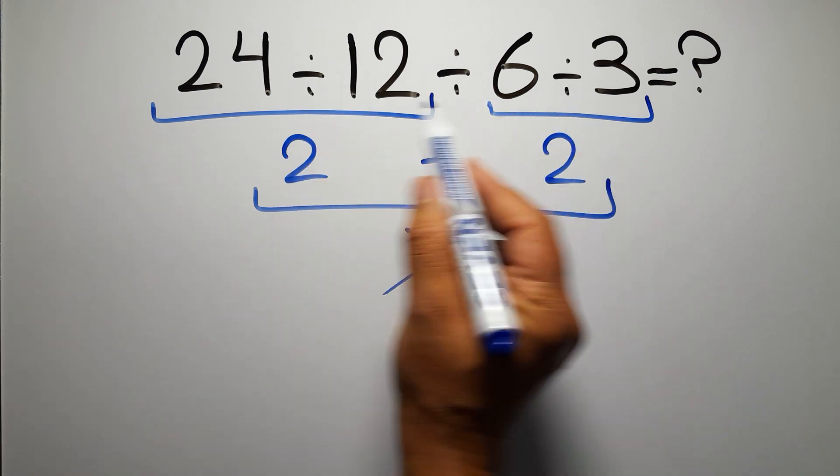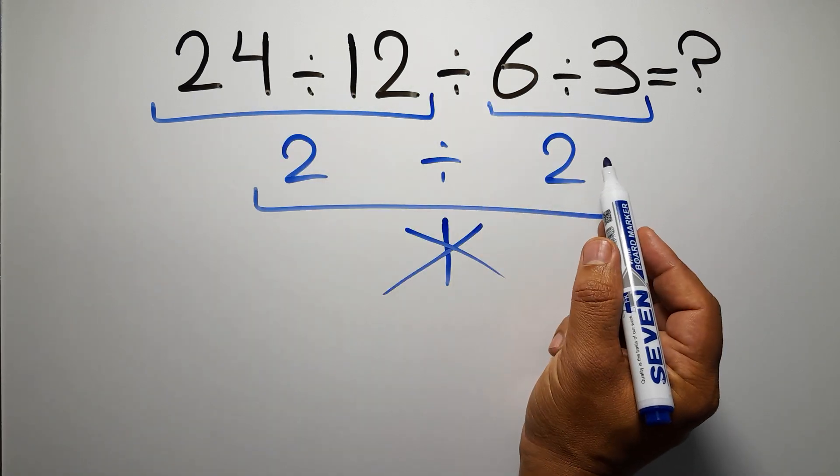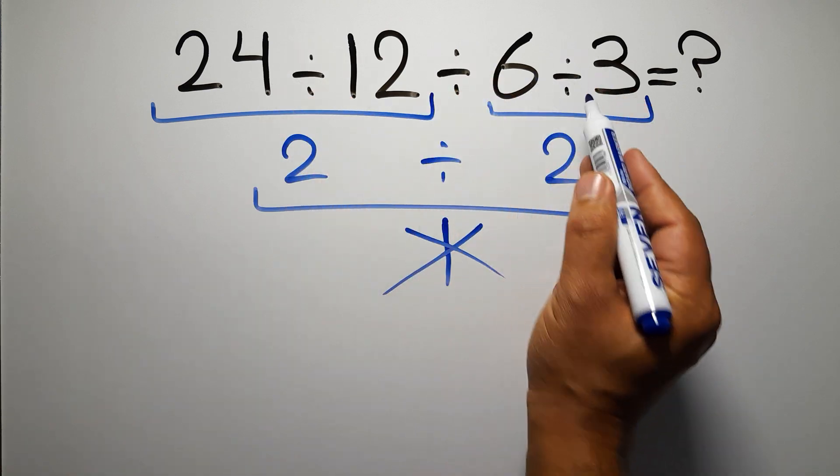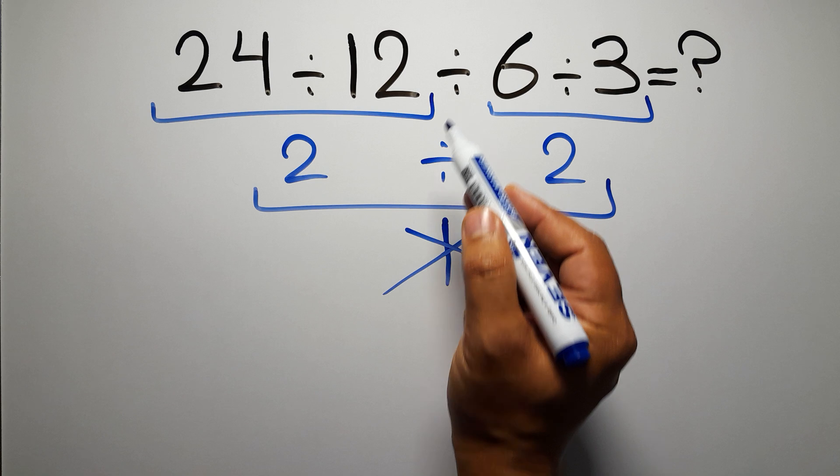So here first we have to do this division, then this division, and finally this division. If we do this division before this division, it is wrong.